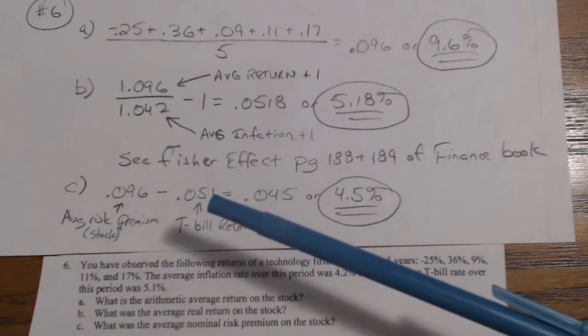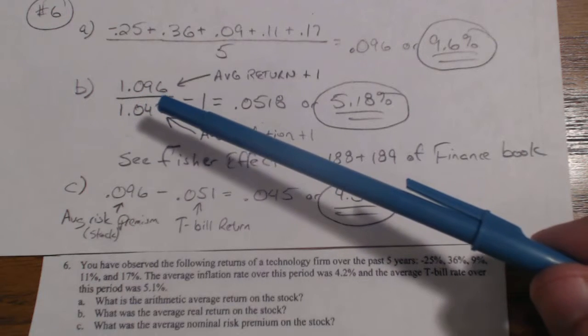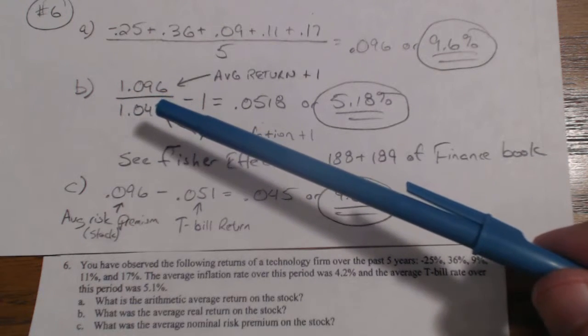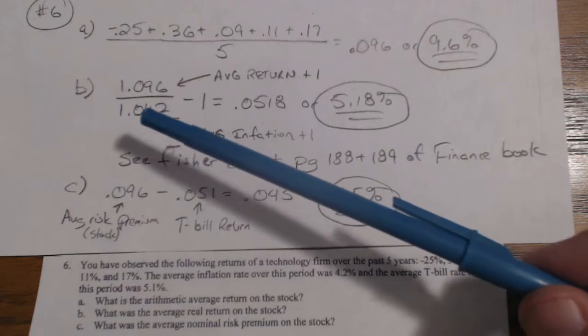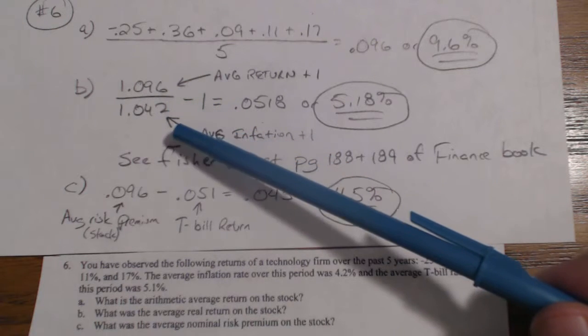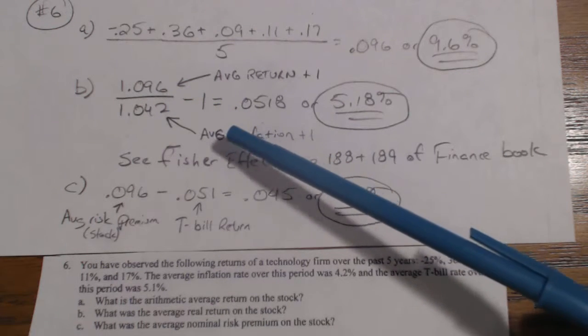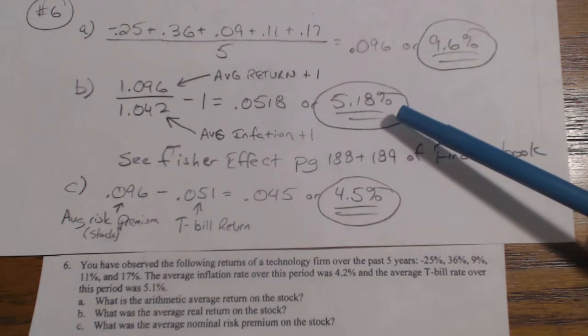In this case, a real simple way of doing it is just taking the rate of return, 0.096, add 1 to it, okay, take the inflation rate, 4.2%, add 1 to it, divide the average return by the inflation rate, and subtract 1 from that. It gets 0.0518 or 5.18%.